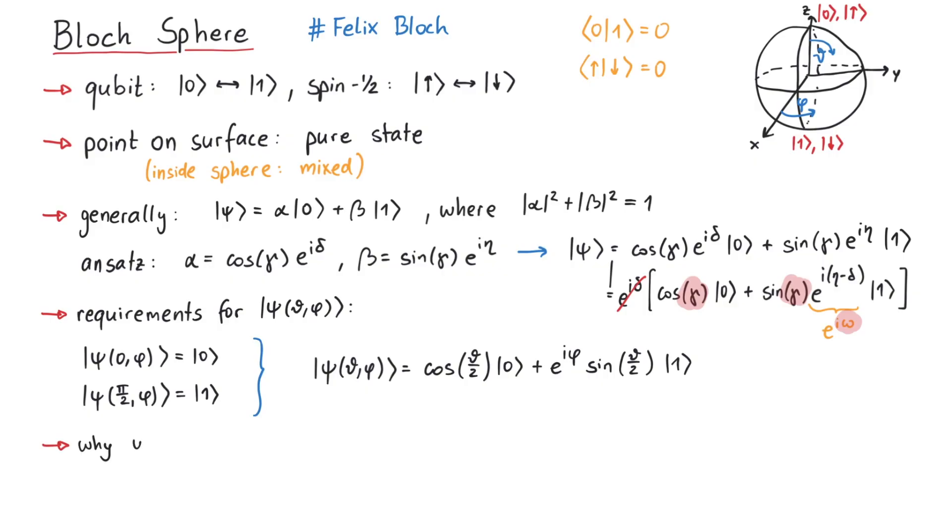Now let's talk about why the Bloch sphere is so useful. If we consider any direction on the Bloch sphere, parametrized by the usual spherical coordinates, the corresponding quantum state is an eigenfunction of the spin operator in that direction with positive eigenvalue.